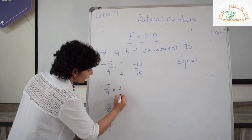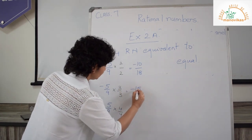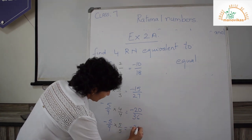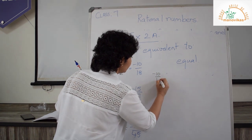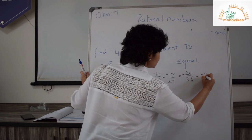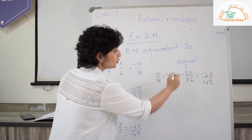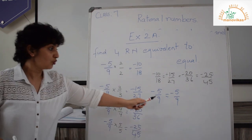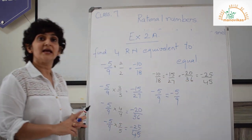Multiplying by 3 gives minus 15 upon 27, multiplying by 4 gives minus 20 upon 36, and multiplying by 5 gives minus 25 upon 45. Now when I look at these, all these fractions look different. But if I reduce each one — 2 fives over 2 nines, 3 fives over 3 nines — you see that each gives the same rational number. That is why we call them equivalent fractions.